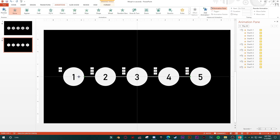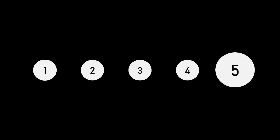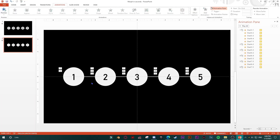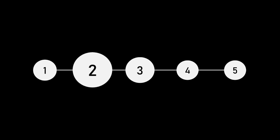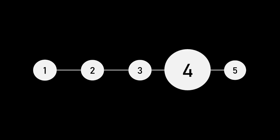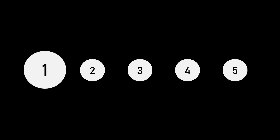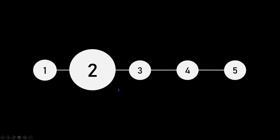Now let's fix the line. If the line goes all the way to the edges, it's visible and doesn't look good. So select the line, hold Control, and place the start of the line in the middle of the first shape and the end of the line in the middle of the last shape. Now we have finished our animation that imitates Morph — without Morph.